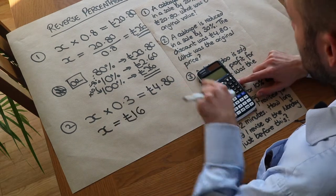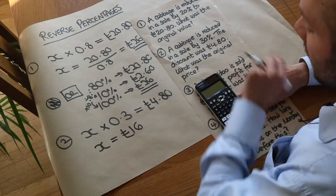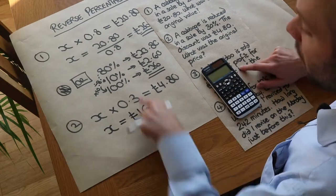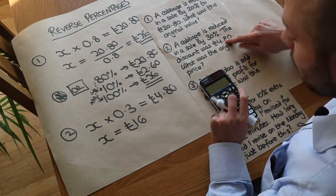So if we did 30% of £16 that would be £4.80 which indeed is that discount. And again we could have done it in an alternative way. We could have said well the discount of 30% is £4.80.